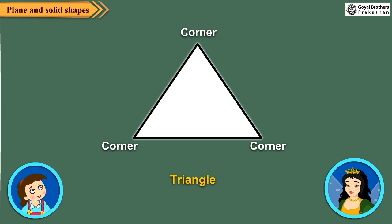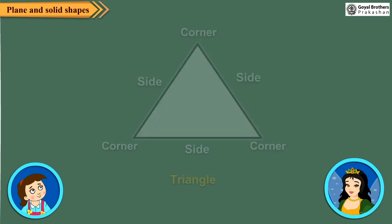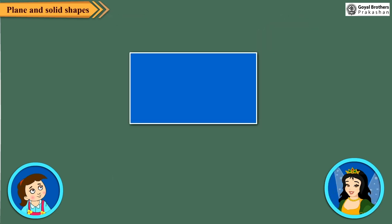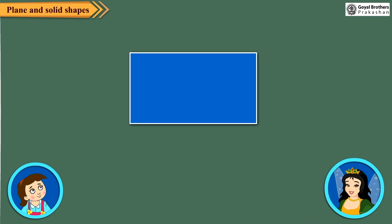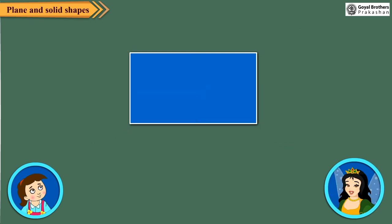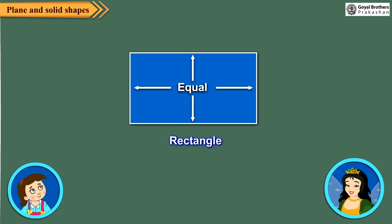This shape is called a triangle. It has three corners. The three straight lines are its sides. This shape here is made up of four equal straight lines. It is a square. It has four corners. Now look at this shape. It is also made up of four straight lines, so it also has four sides and four corners. But it is not a square because all its sides are not equal. Its opposite sides are equal. It is a rectangle.